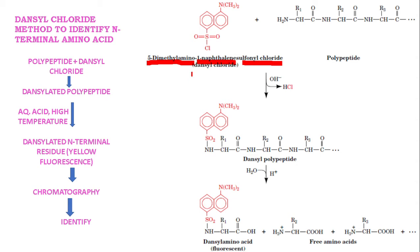This danzyl chloride is allowed to react with the polypeptide chain. Just look here — it has an N-terminal residue. After the reaction, danzyl polypeptide is produced. The chloride ion is going out in the form of HCl, and the SO2 is reacting with the NH group. So SO2 and NH give us the danzyl polypeptide.